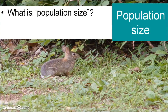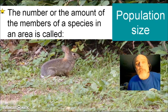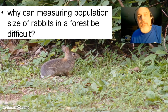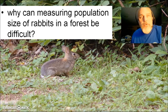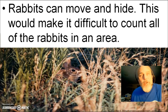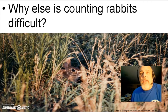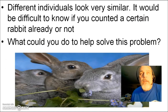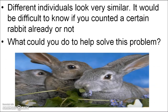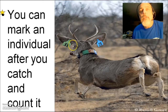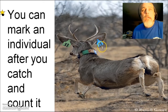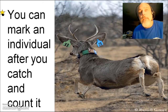Population size is the number of members of a species in an area. Let's say we're trying to figure out the population size of rabbits in a forest. This could be a difficult task — rabbits don't just sit still; they can run, hide, and blend in with their surroundings. And once you find them, many look very similar, so how do you know which ones you've counted and which you haven't? You could use tagging — mark the individuals you've captured and counted. That way, giving them identification numbers, you can track their movements and learn about how the animal population behaves.